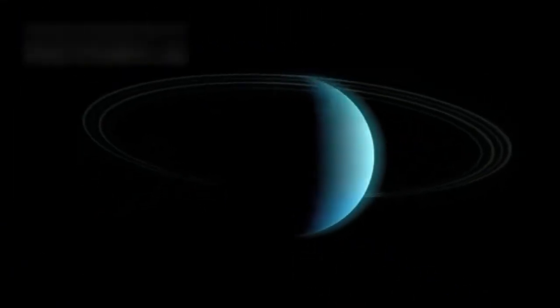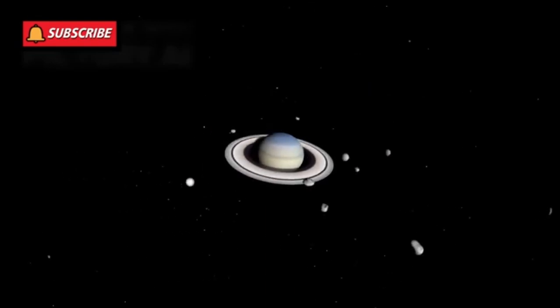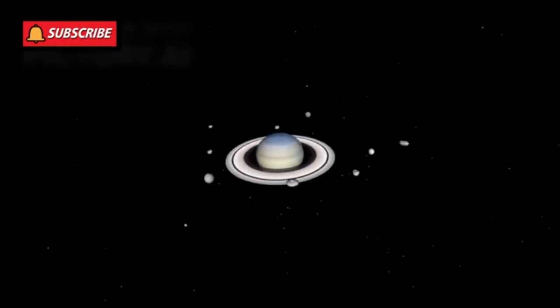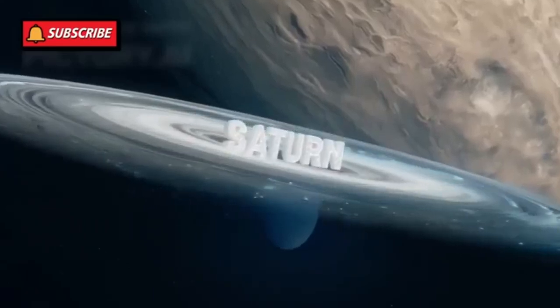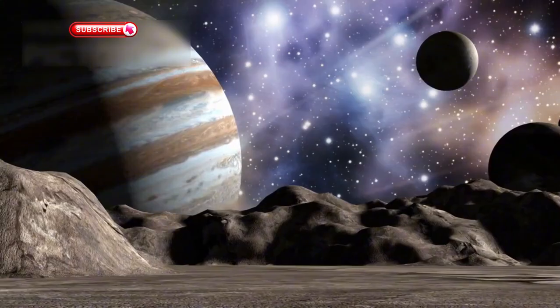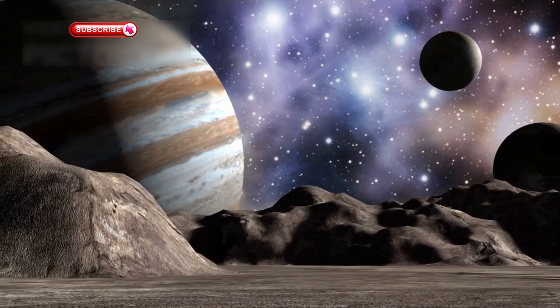Voyager will drift endlessly through space, orbiting the Milky Way for thousands or even millions of years. In around 40,000 years, it may pass near another star system. Though it will no longer transmit, it will still carry the Golden Record—a message from Earth to the cosmos.